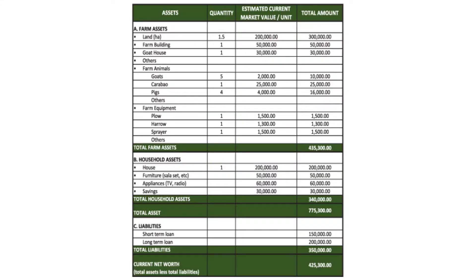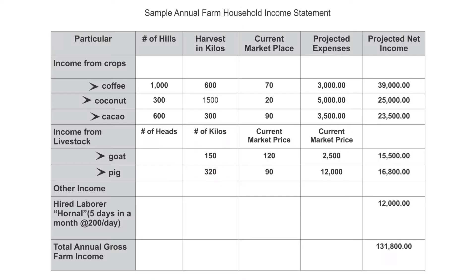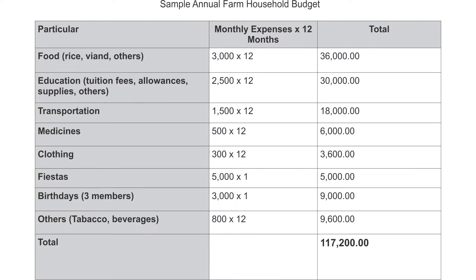Number 1: Farm household or farm resource inventory. Number 2: Farm household gross income. Number 3: Farm household budget.